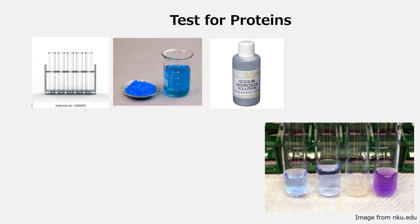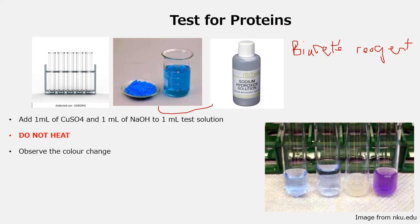The test for proteins is also very easy and very direct. You have your test solutions and you are given copper sulfate and sodium hydroxide — in some cases you might have a mixture called the biuret reagent. All you have to do is add one ml of copper sulfate and one ml of sodium hydroxide to one ml of your test solution. Do not apply any heat to the protein test at all. Just observe the color change after you've added all of these — leave it to stand for a bit and shake it so you can see the color clearly. A purple color indicates a positive result — the presence of protein. The darker the purple, the higher the concentration of protein.